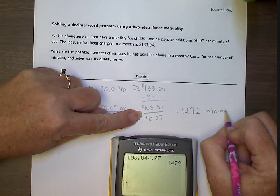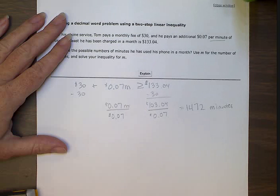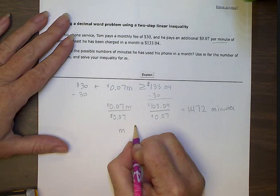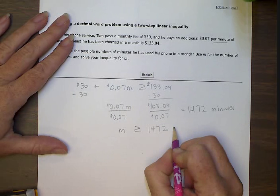That's the least amount he used in a month, anything greater than—so now we have minutes is greater than or equal to 1,472 minutes.